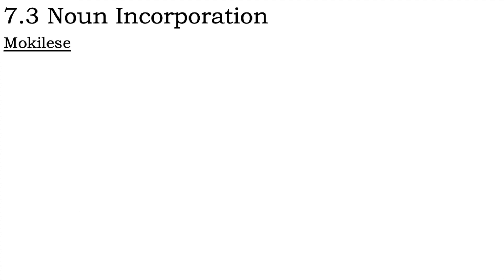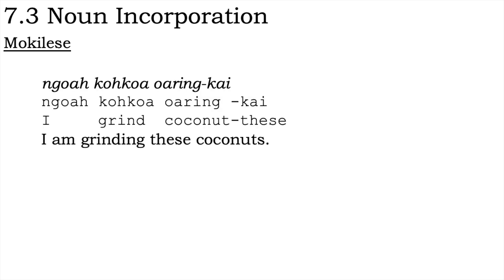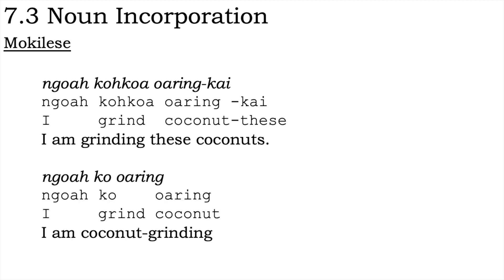A similar case can be seen in some languages in Oceania. Take the following example from Mokilese: 'I'm grinding these coconuts' versus 'I'm coconut-grinding.' Note that while the verb and its incorporated object are still separate phonological words, in the incorporation manifest in the second example, the verb and noun are syntactically bound to one another and behave as a single unit. In Oceanic languages with this sort of incorporation, furthermore, the verbs generally involved behave as though they are intransitive.